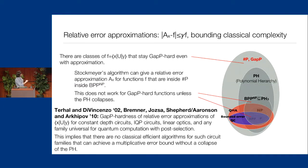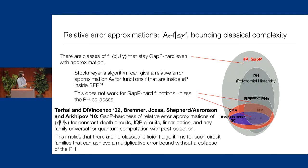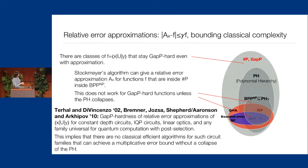Relative error approximations for sharp-P problems fall down into the third level of the polynomial hierarchy. The reason is Stockmeyer's algorithm, which delivers in BPP-to-the-NP a relative error approximation to such functions. Lumping together a bunch of results into one statement: an argument that began with Terhal and DiVincenzo in 2002, which has since been refined — the gap-P hardness of relative error approximations for quantum circuit amplitudes holds for constant-depth circuits, IQP circuits, linear optic circuits, and any family universal for quantum computation with post-selection.